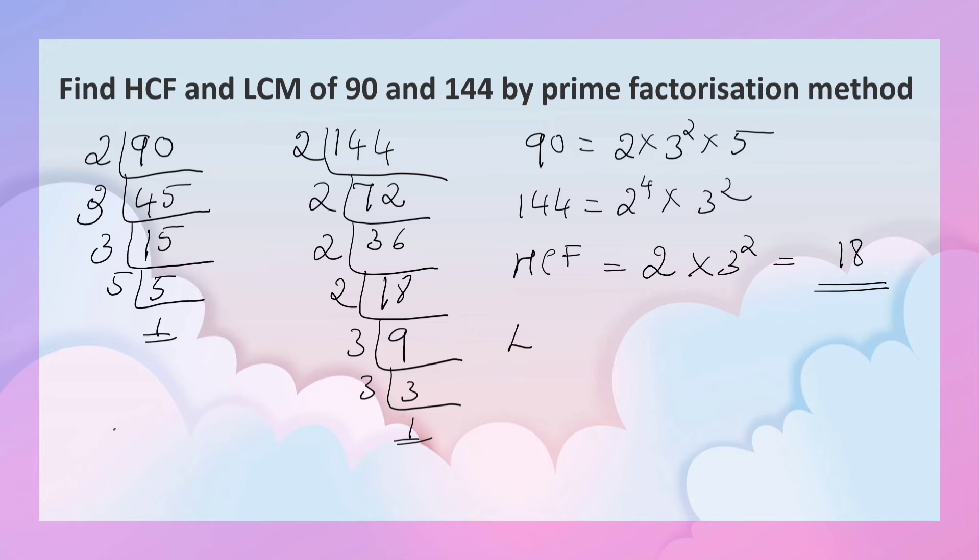Now find LCM. In LCM we have to write all the factors with highest power. 2⁴. Among 2 and 2⁴, 2⁴ has the highest power. Here 3 squared.